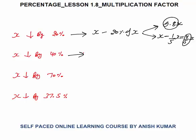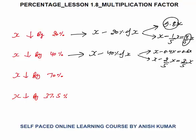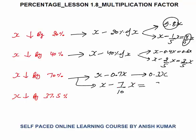X decreased by 40%: x minus 40% of x becomes x minus 0.4x, that is 0.6x in decimal form, or x minus 2/5 x equals 3/5 x in fraction form. Now straight away: x minus 70% of x becomes x minus 0.7x, that is 0.3x, or in fraction form 70% is 7/10, so x minus 7/10 x equals 3/10 x.